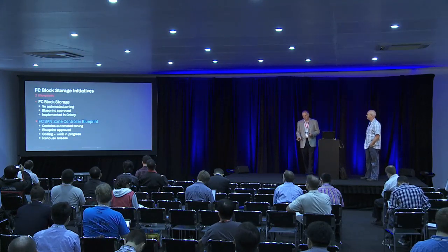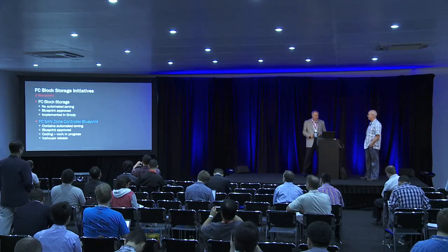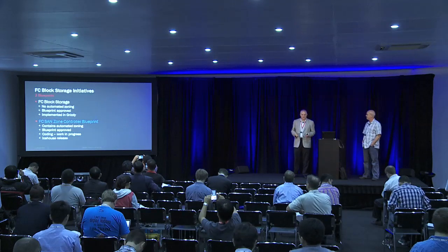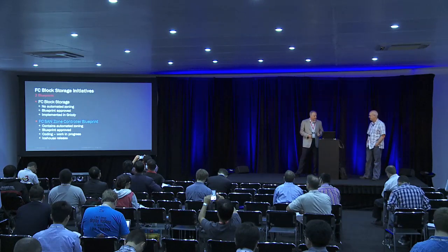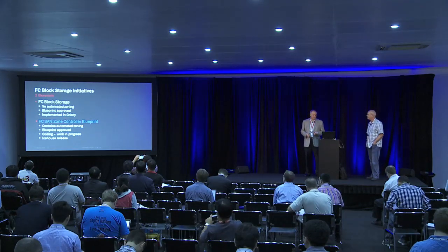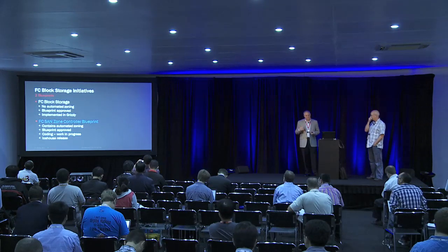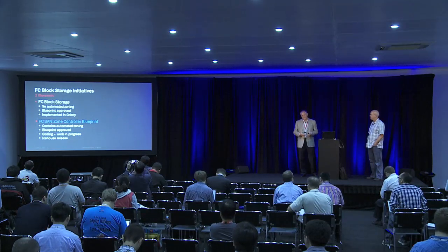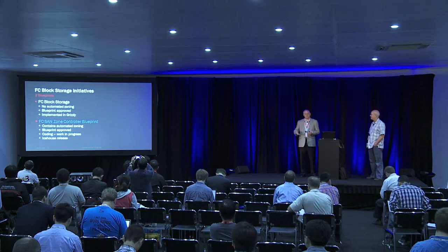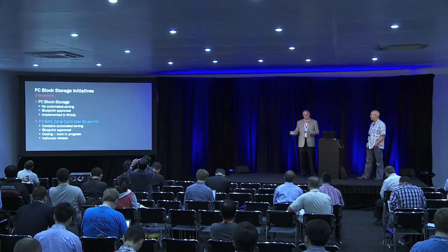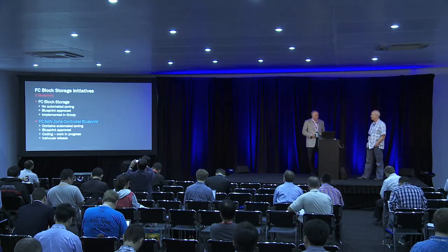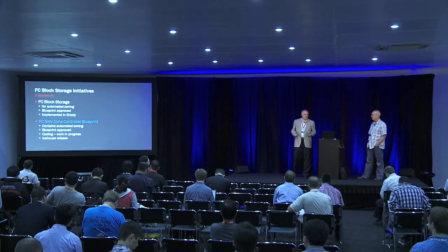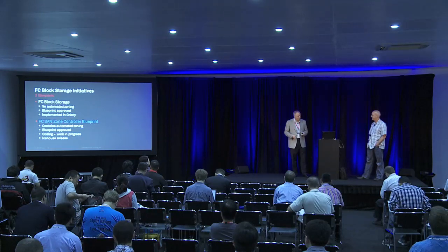There were two blueprints. One is the past implementation done in Grizzly, which didn't provide for any automation of zoning. The second one is the Fibre Channel SAN Zone Controller blueprint, and that one automates zoning, which is really where we need to be for this to work. There are a number of other things past Icehouse that need to be done, but one thing at a time. That blueprint has been approved and the coding is in the works — prototypes are already working. It's just a matter of hardening the code.